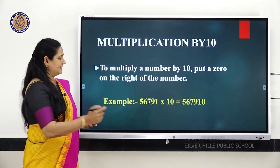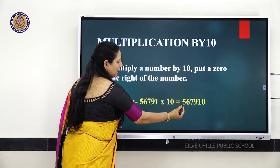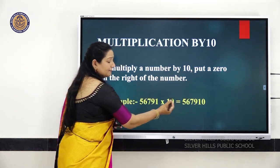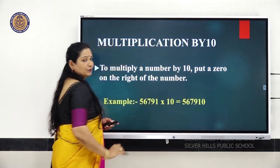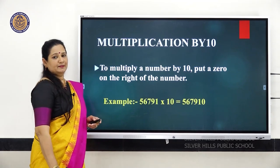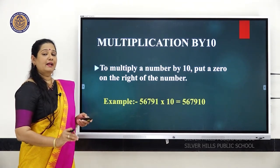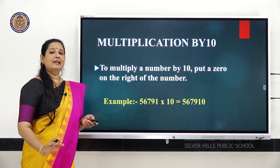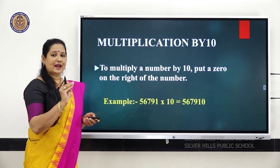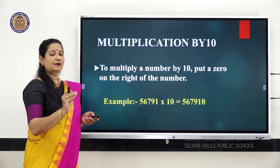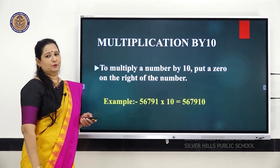You know which is the right side. So after writing the number, you are going to add this extra zero there. When you multiply any number by 10, first you write that number and you add one extra zero.